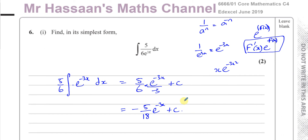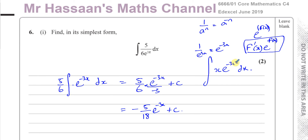That's the answer for question 6 part 1. I'll make this a separate video and put it under the P3 section of integration, because that's where it belongs now. The new P3 has integration, and this is one of those types. If instead we had x times e to the power of minus 3x without the squared, I wouldn't be able to use this method — I'd have to use integration by parts, which we'll do later.